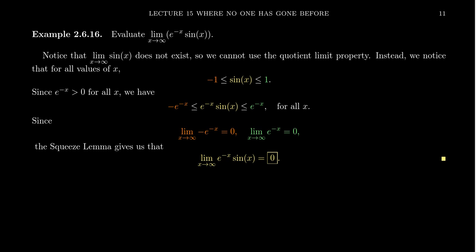So if you times everything by e to the negative x, you'll get negative e to the negative x right there. You'll get e to the negative x times sine of x right there. And you'll get e to the negative x times one right there. So we get these inequalities. And so this then gives us the squeeze that we want.